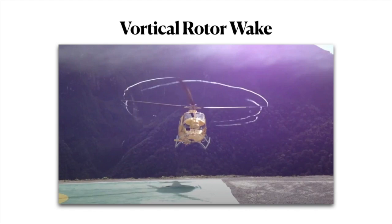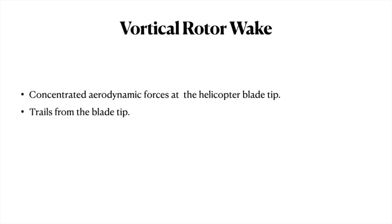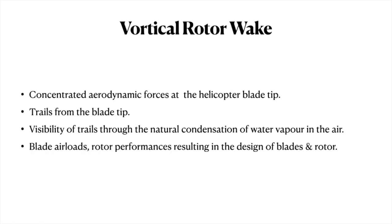Predicting the strength and location of the tip vortices plays a major, very important role in determining the blade air loads and rotor performance, as well as in designing the blades and rotor as a system. The concentrated aerodynamic force at the helicopter blade tip gives the circular trailings—these trails from blade tips are vortices. These trails are formed through the natural condensation of water vapor in the air, and it is very important to find out the blade air loads, rotor performance, and the design of blades and rotors.